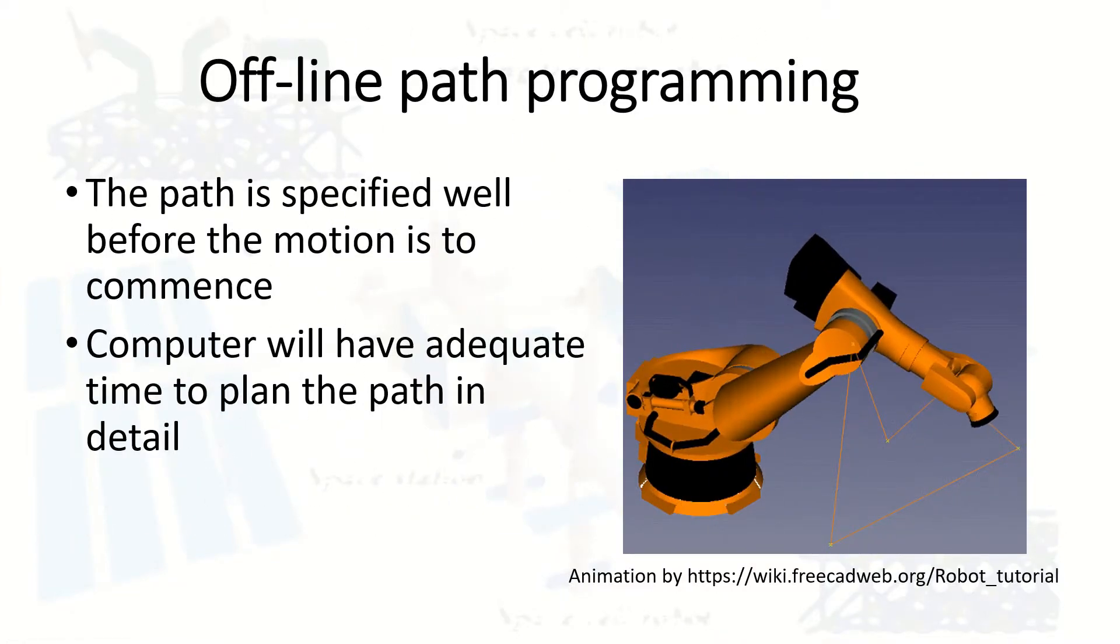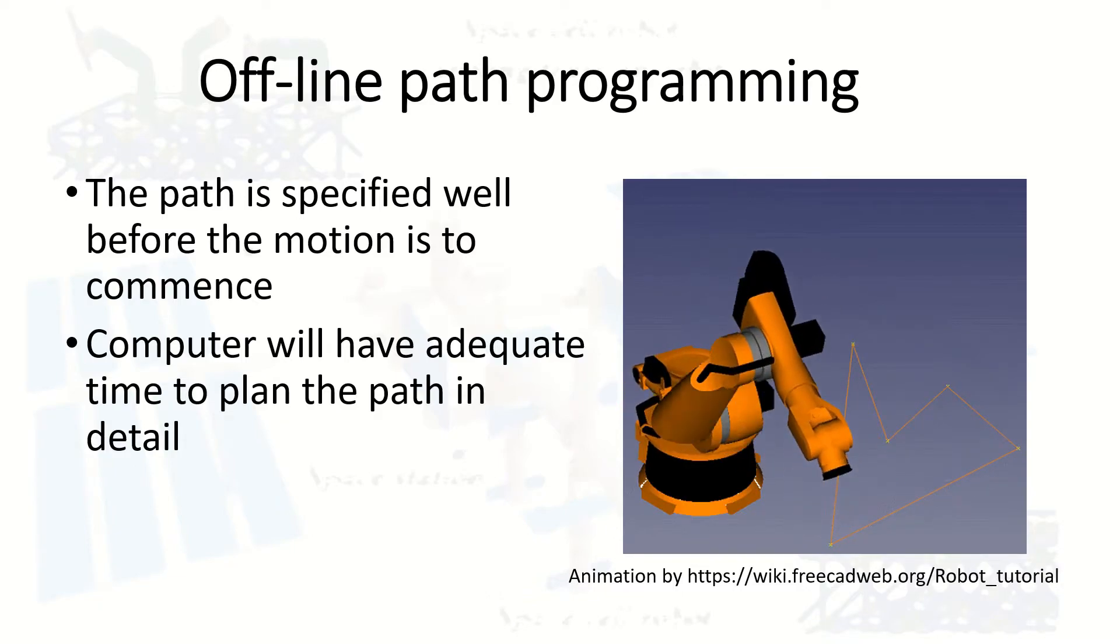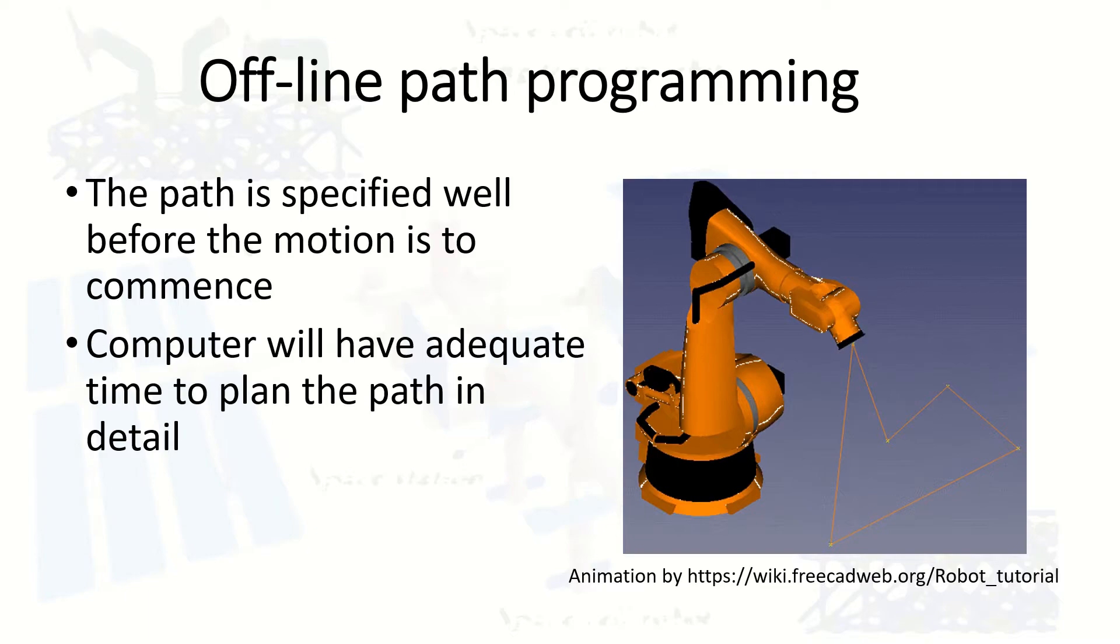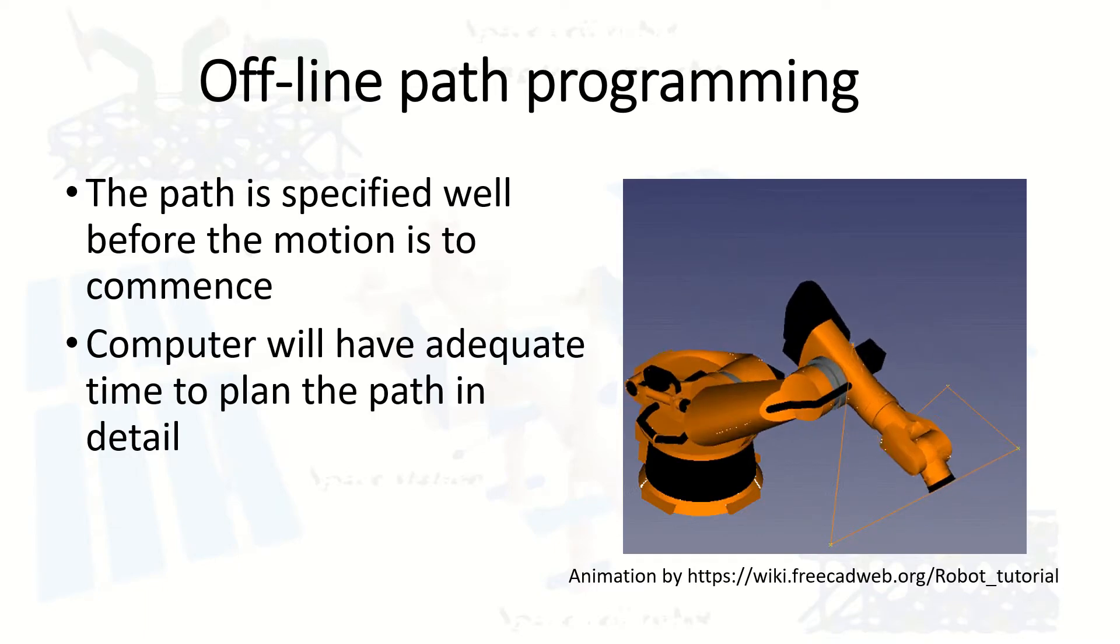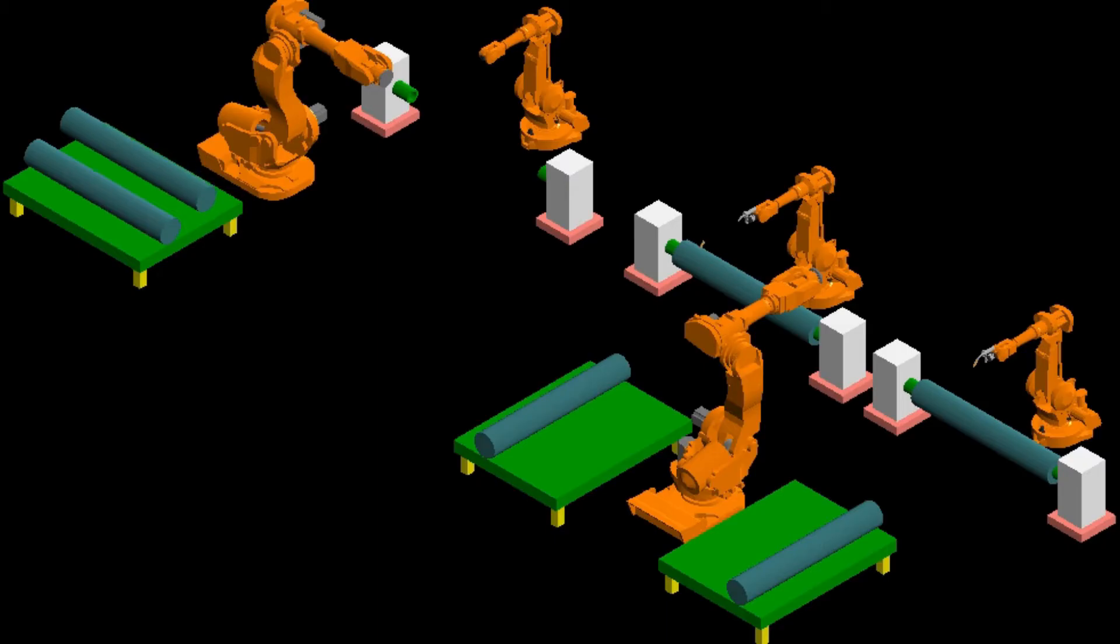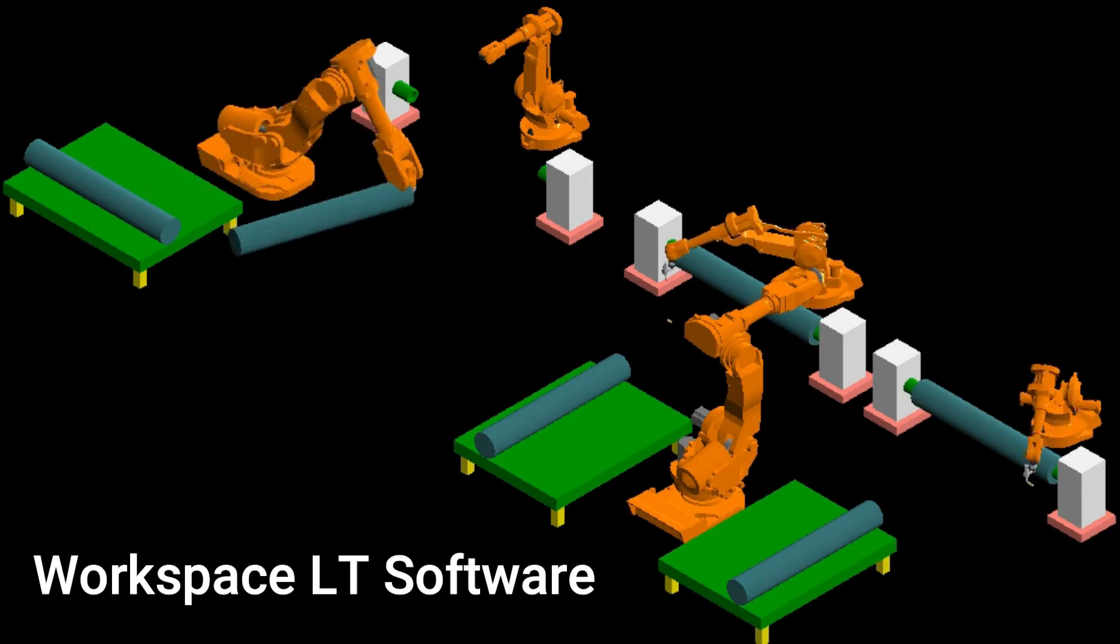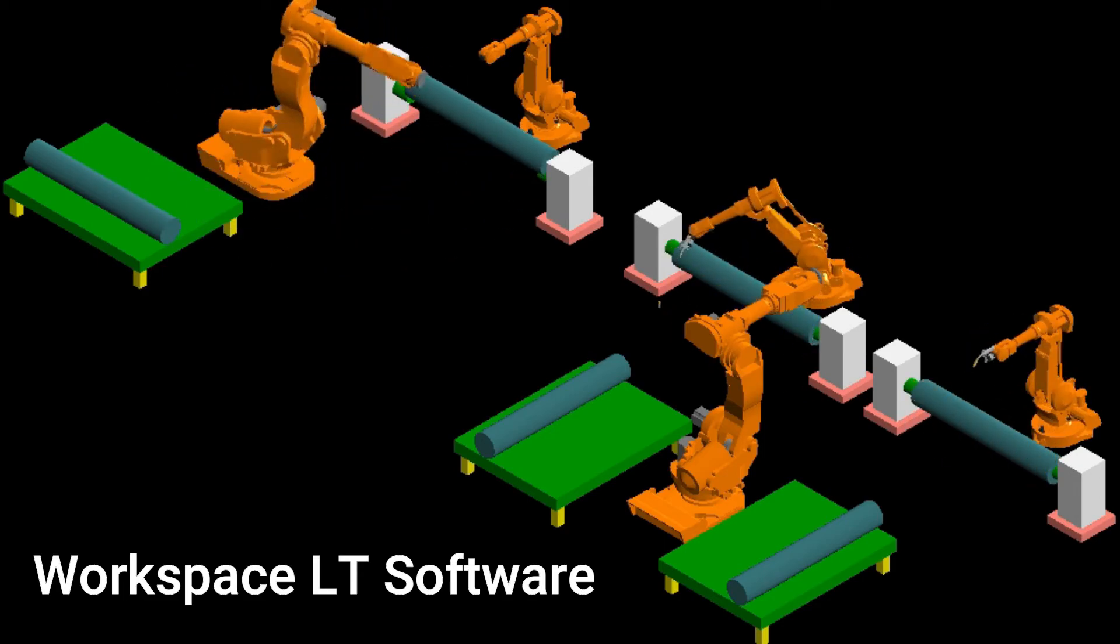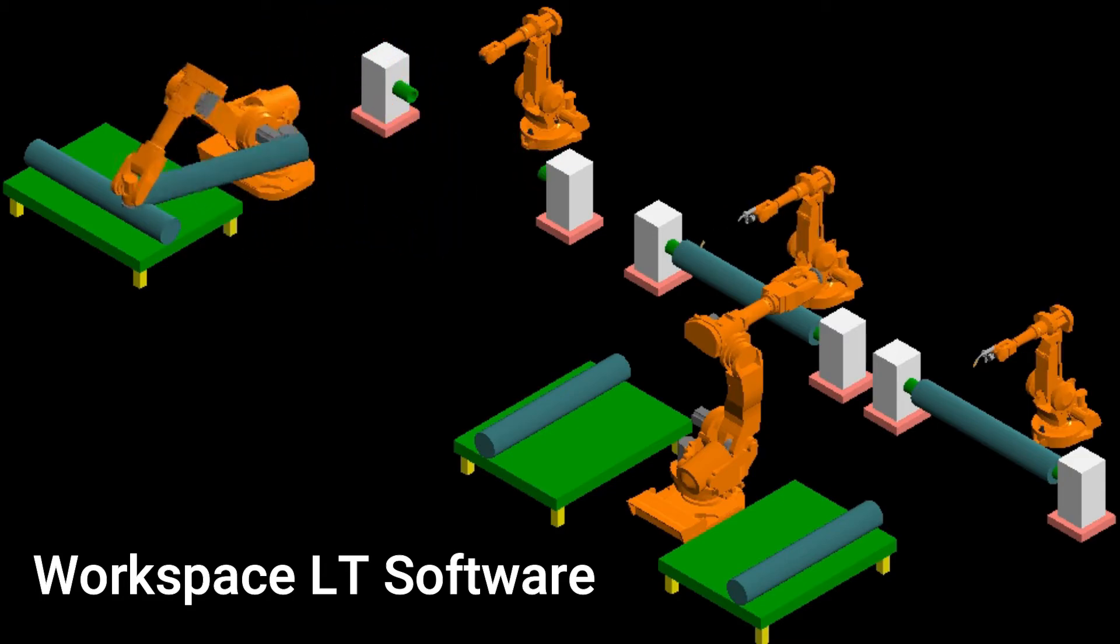Another method in commercial robots programming is offline path programming. This path programming is also one of the favorable methods in the industry because here we can simulate or make offline robot path planning or motion design before we implement on the robot on site. We have a lot of studios right now.